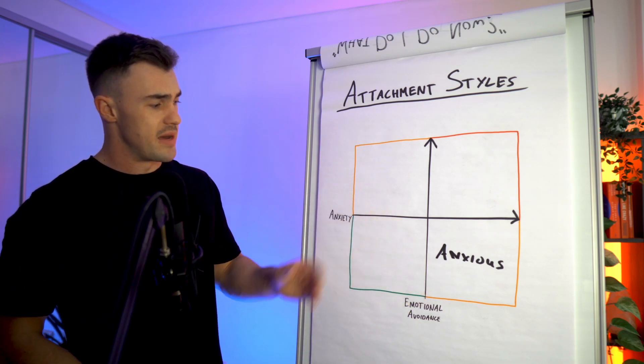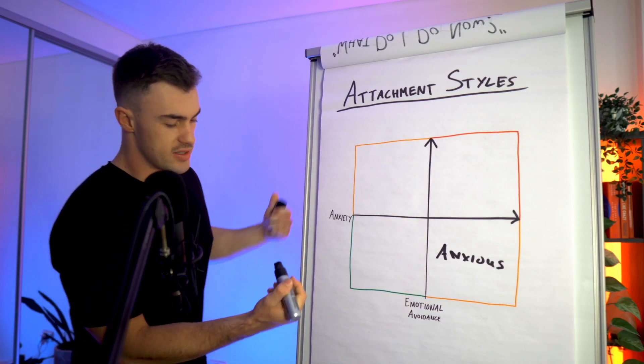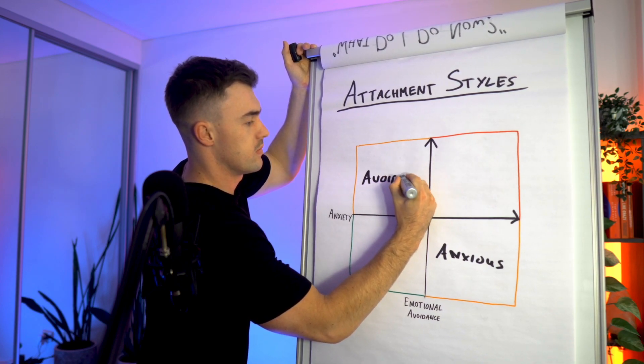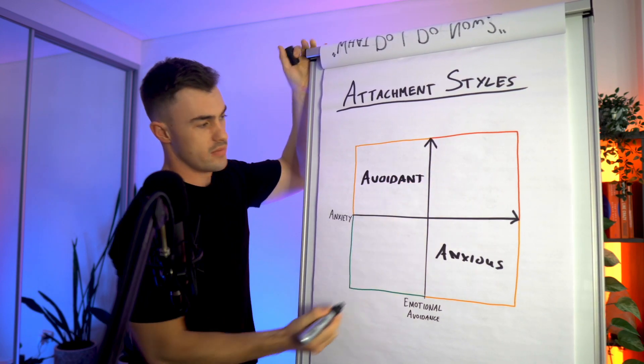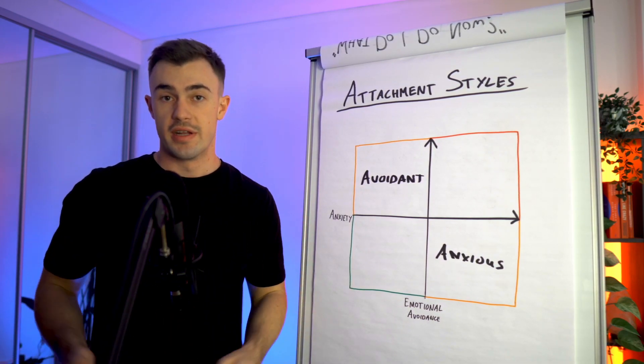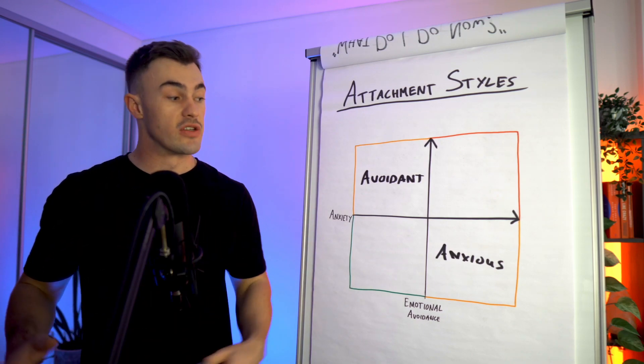Now the second example are those who are high in emotional avoidance. Now this is known as the avoidant attachment style. So those who have an avoidant attachment style had parents who raised them in an opposite way to the anxious type. So essentially they were actually given too much freedom and independence.